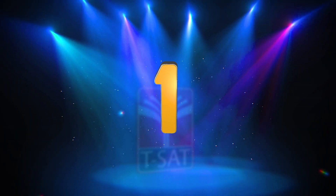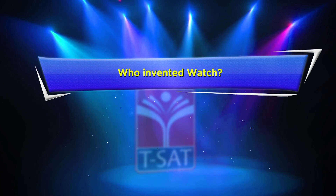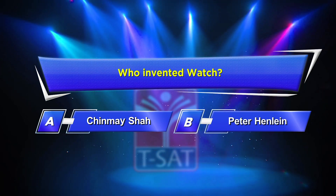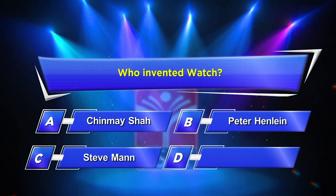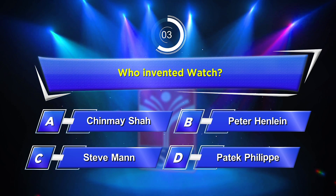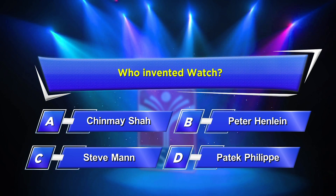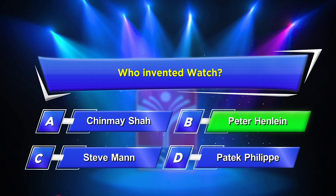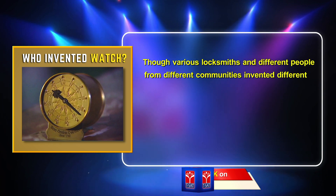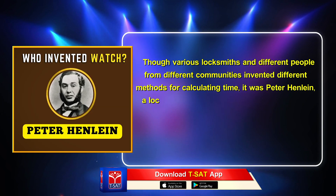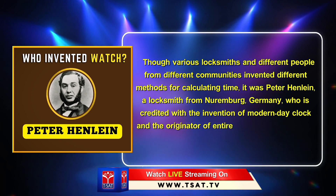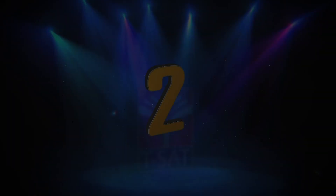First question on your screen — it's about inventions. Who invented the watch? Option A... Your time starts now. The correct answer is Option B, Peter Henley. Though various locksmiths and different people from different communities invented different methods for calculating time, it was Peter Henley, a locksmith from Nuremberg, Germany, who is credited with the invention of the modern-day clock and the originator of the entire clock-making industry that we have today.